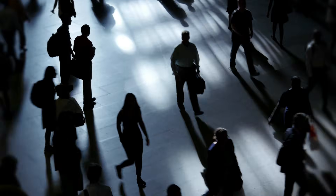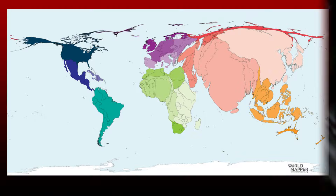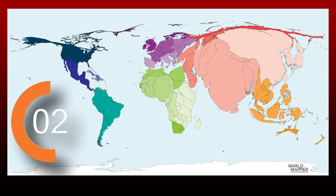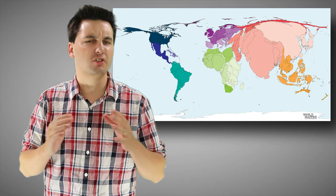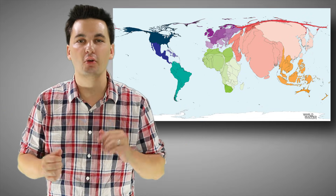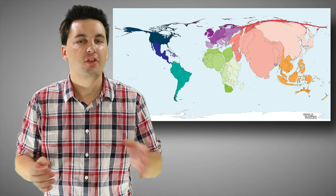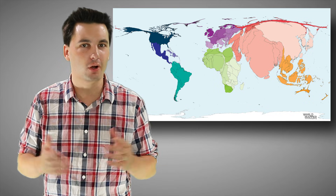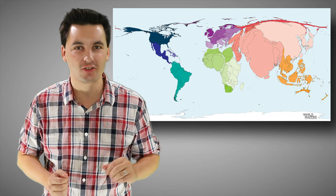Before we get ahead of ourselves, take a couple of seconds and look at this cartogram map of the world. What you're looking at is the population of different countries. Right away we can see countries like China, India, and Indonesia are massive — they have huge populations — while countries like Canada are almost non-existent on the map.